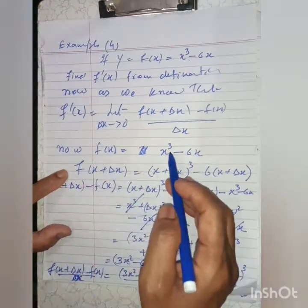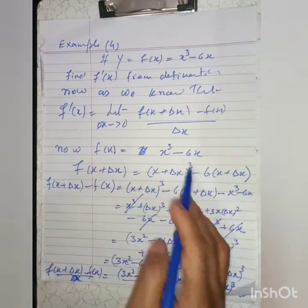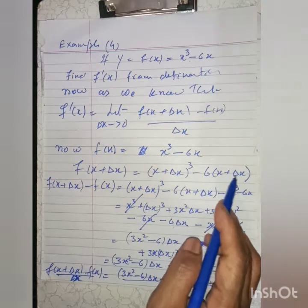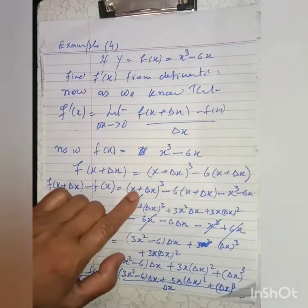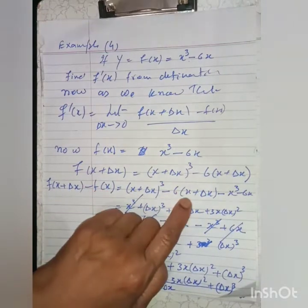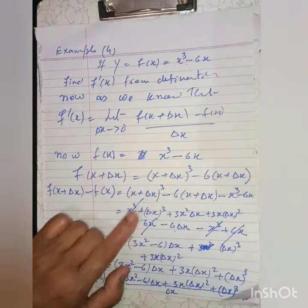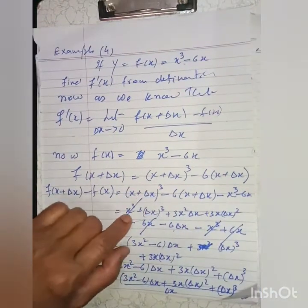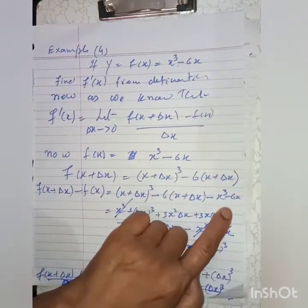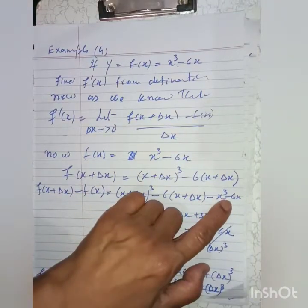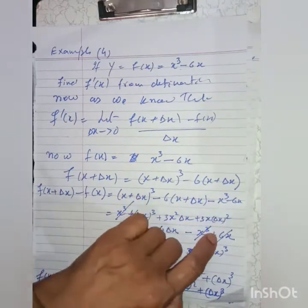Since f(x) = x³ - 6x, then f(x + Δx) = (x + Δx)³ - 6(x + Δx). So f(x + Δx) - f(x) = (x + Δx)³ - 6(x + Δx) - (x³ - 6x), which expands to x³ + (Δx)³ + 3x²(Δx) + 3x(Δx)² - 6x - 6Δx - x³ + 6x.